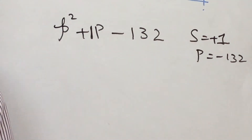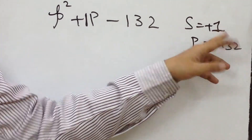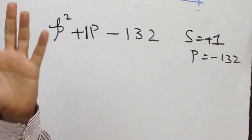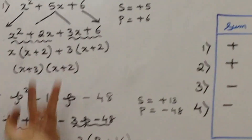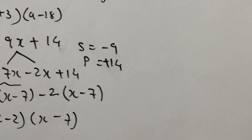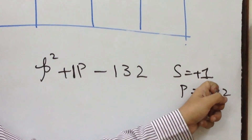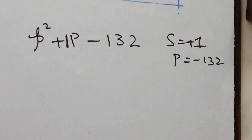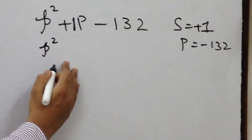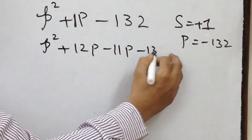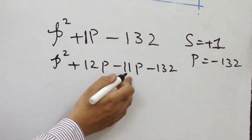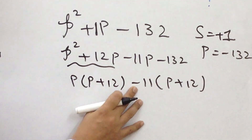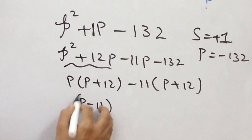I reiterate: irrespective of the sign for the sum, if the sum happens to be 1 — whether it is plus 1 or minus 1 — the two numbers shall always be consecutive numbers. In this problem, the answer is p squared plus 12p minus 11p minus 132. Plus 12 minus 11 gives plus 1, and plus 12 into minus 11 is minus 132. Working out: p into p plus 12, minus 11 into p plus 12. Since the outside sign is minus, the inner sign changes. The answer is p minus 11 into p plus 12.